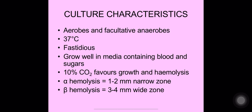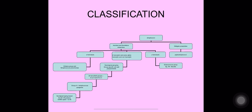Both alpha and beta hemolysis can be seen in streptococci. Alpha hemolysis shows a narrow zone of 1 to 2 millimeters with greenish discoloration, while beta hemolysis — or complete hemolysis — shows a larger, wider zone of complete clearing.